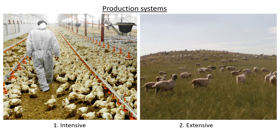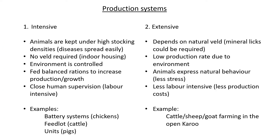Comparing the two: for intensive production, animals are kept under high stocking densities — as seen in the picture with lots of animals in housing facilities. The main problem, however, is that diseases can spread very easily. If one individual animal is sick, the disease spreads very quickly because the animals are so close together.